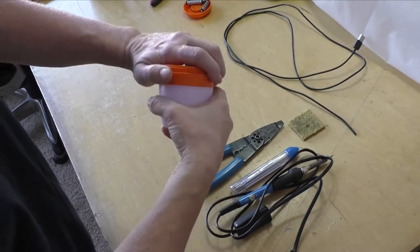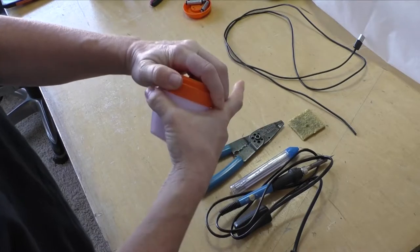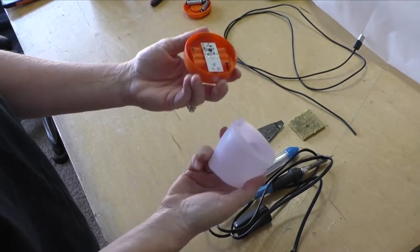So first thing, we'll just take the light apart. It kind of unscrews, I think. It goes like that. They come apart pretty easy.